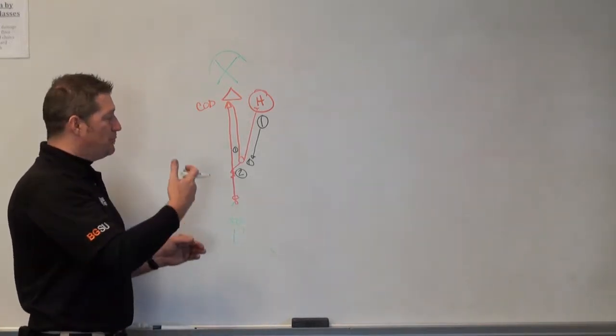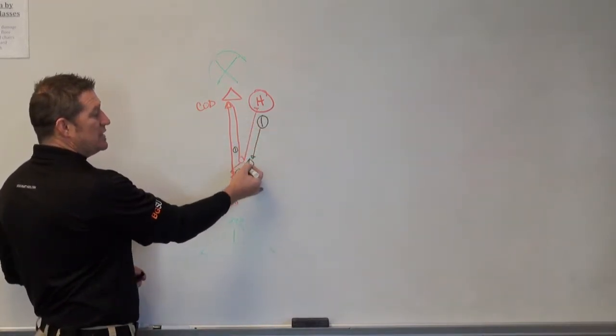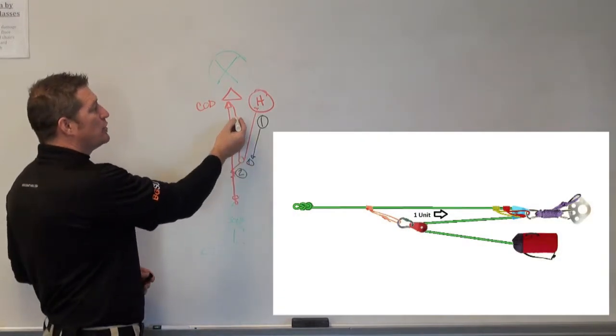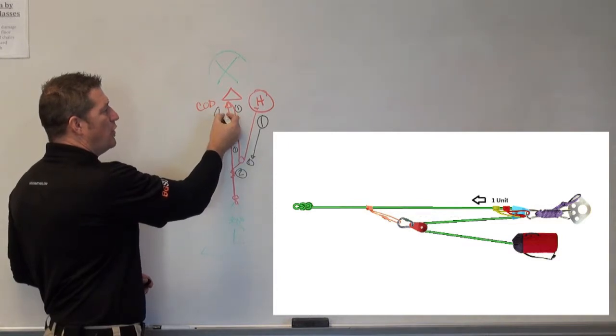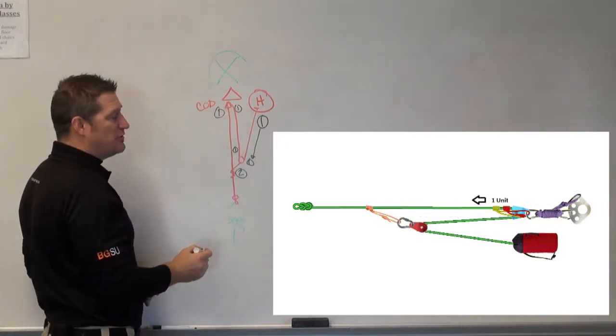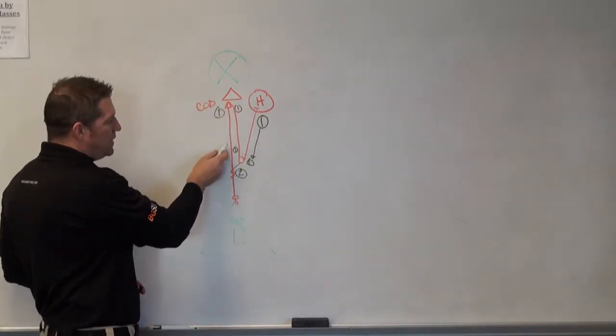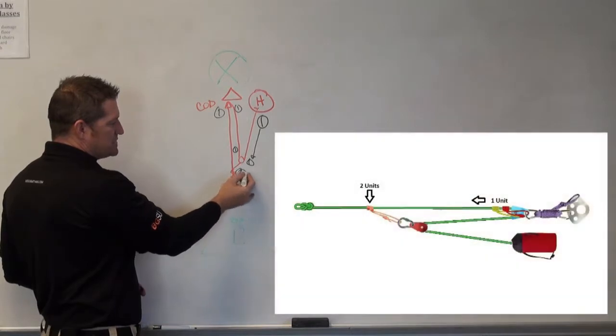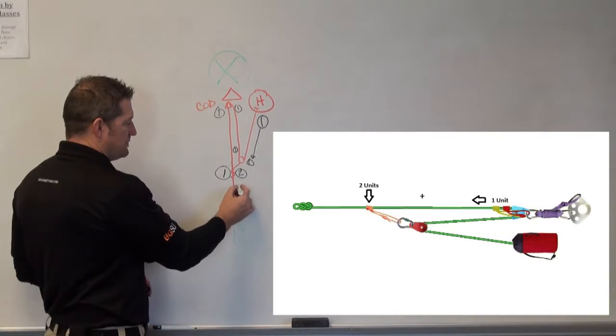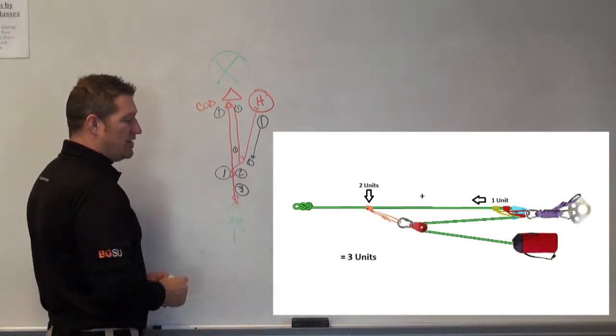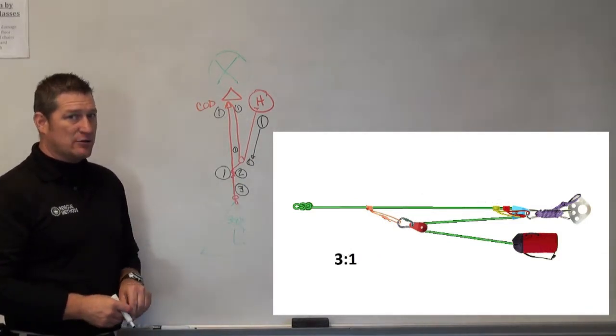A knot that moves, a pulley that moves, or a prussic that moves. So one unit comes in, one unit comes out, it stays the same, progresses through the system, resulting in one unit of tension going through the change of direction, one unit of tension coming out of the change of direction, staying the same, no mechanical advantage calculation. And then that one unit of tension comes down and meets that prussic where those two units of tension are. This results in three units of tension coming out of that system beyond that point, giving us our 3-to-1 mechanical advantage.